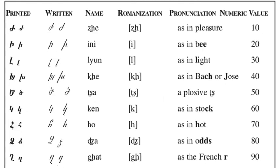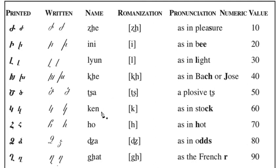The next nine are the tens: ZE, INI – I, LUN – L, CHE – H, ZA – ZE, GEN – G, HO – H, ZA – ZE, RAT – R.